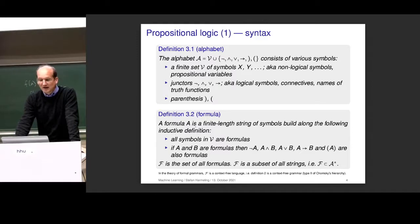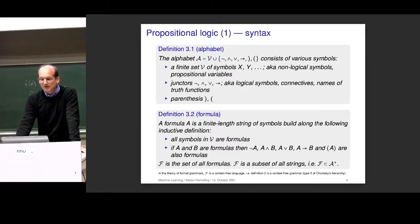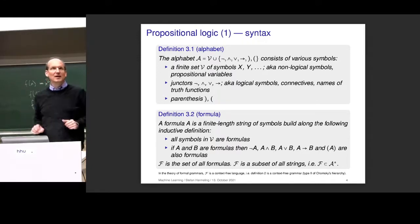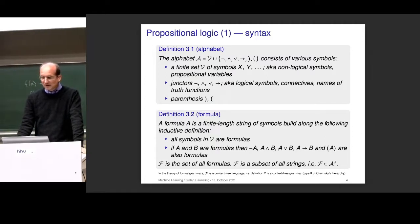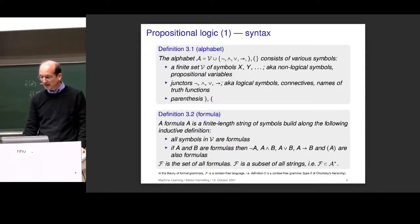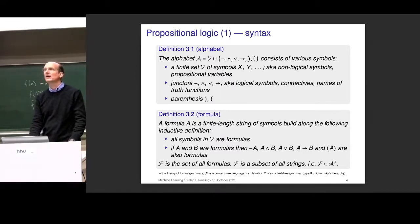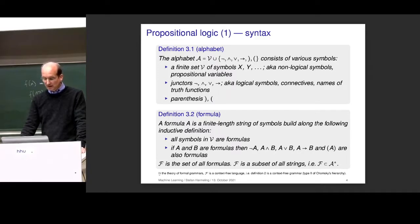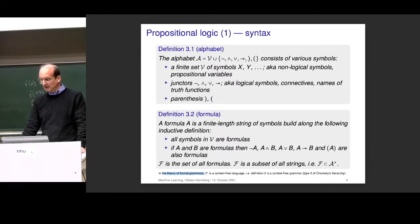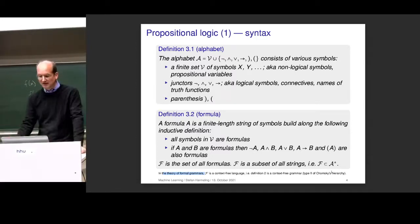Now comes the definition of what is a valid formula — what strings are valid. A formula A is a finite-length string of symbols from the alphabet. We start by saying all symbols in our set of non-logical symbols are formulas already. And if you have two of them, you can construct new ones with these connectives. We call this curly F the set of all formulas, and it is a subset of all possible strings, denoted A-star. From this information we could already write a parser.